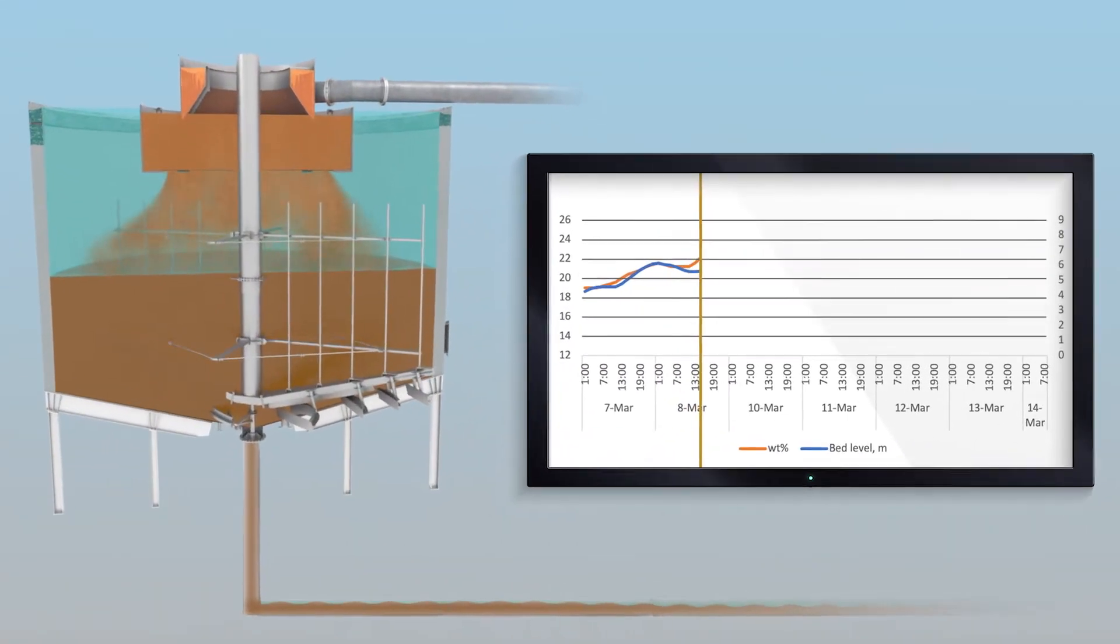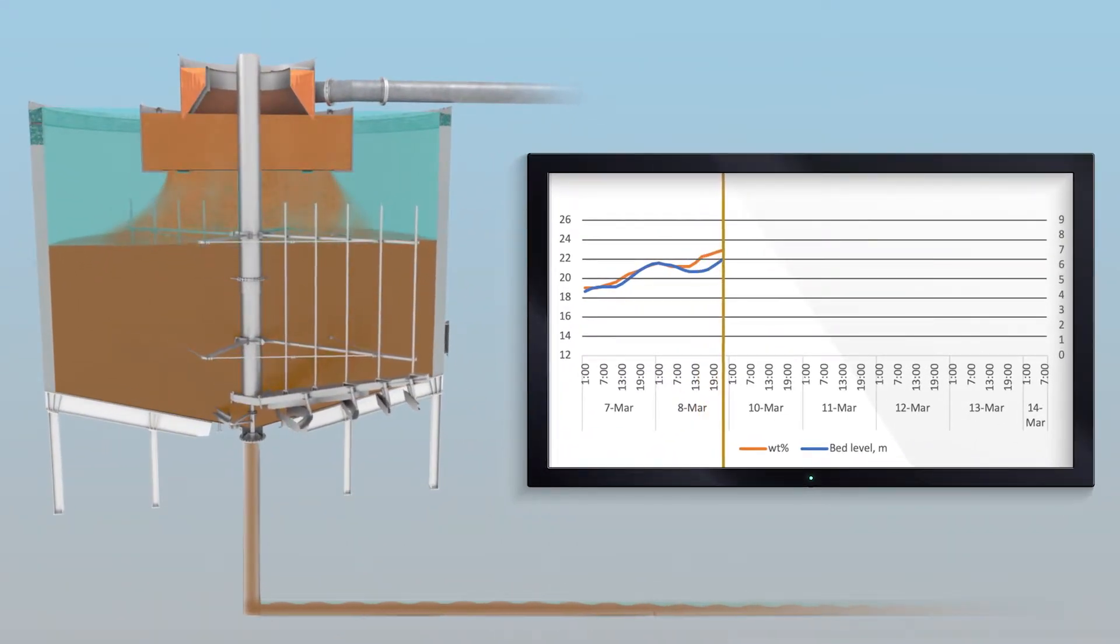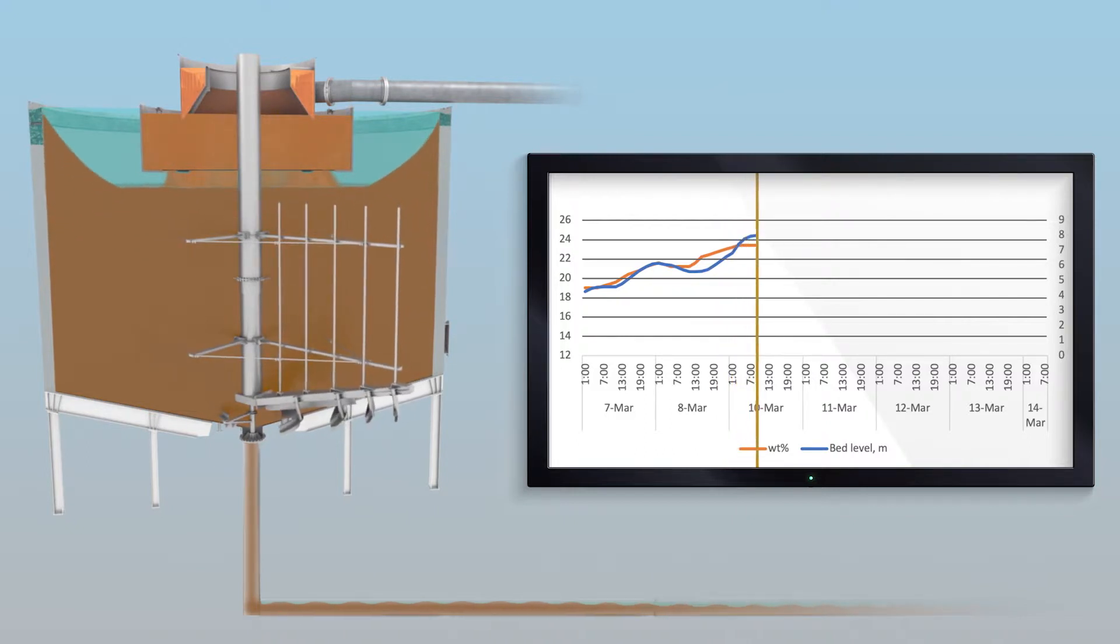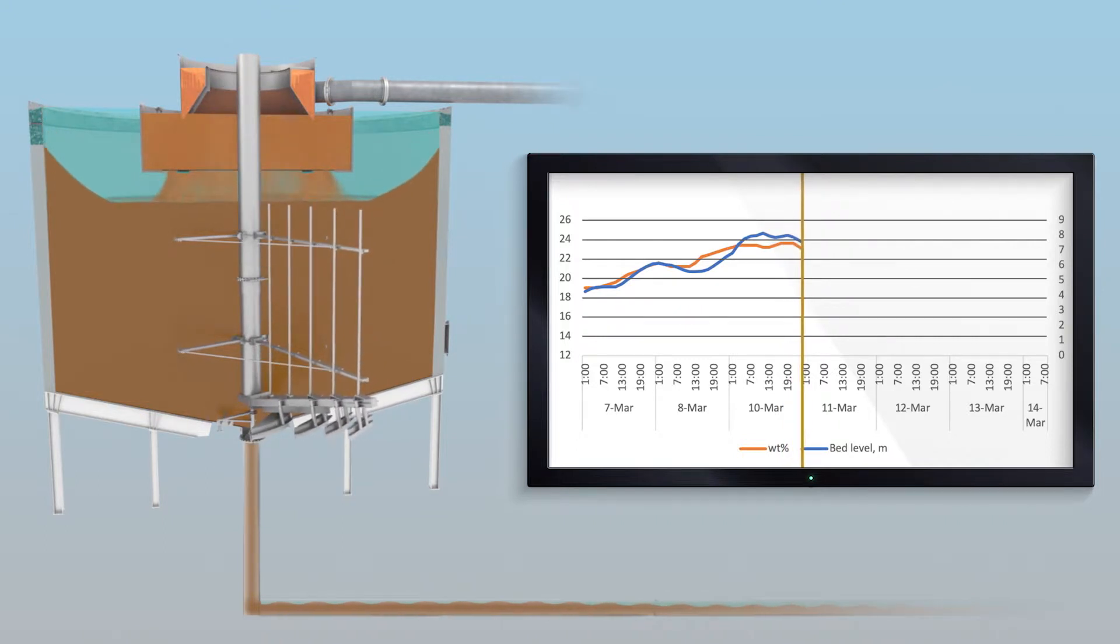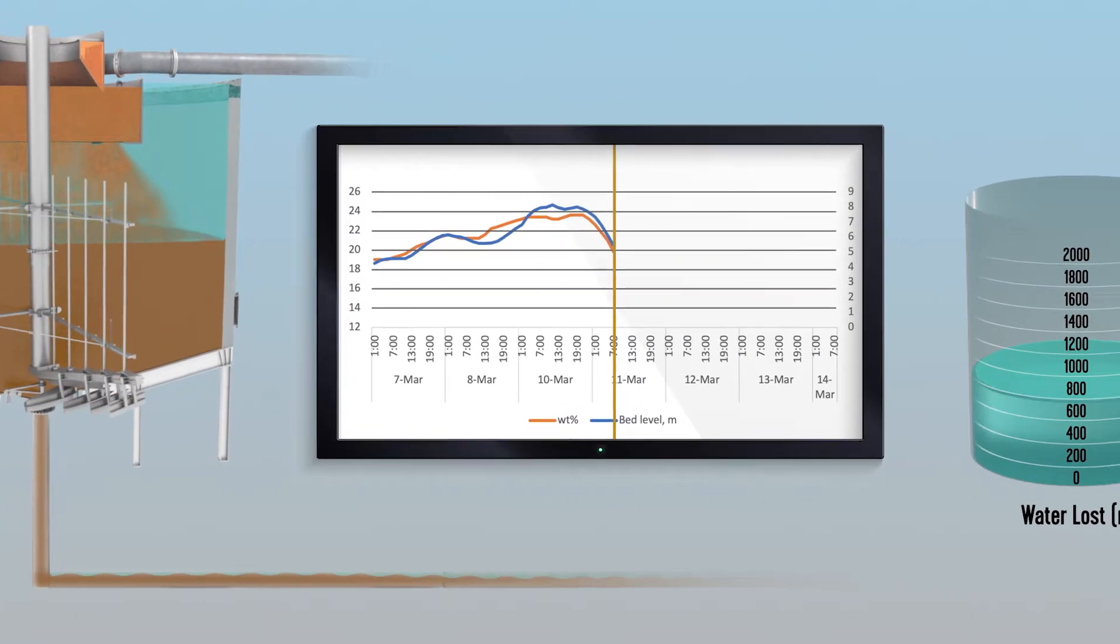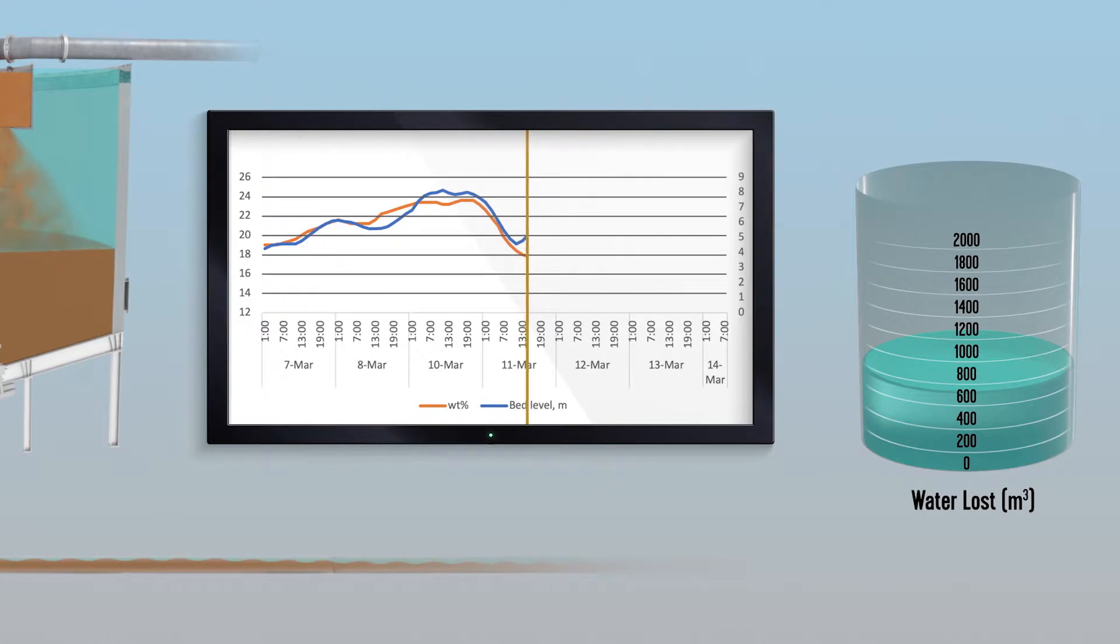In this high-density unit, for example, the bed level is fluctuating. When the bed level is too high, solids spill over into the launder. When the bed level is allowed to vary, the underflow lacks consistent density, causing significant water loss after just a few days of operation.